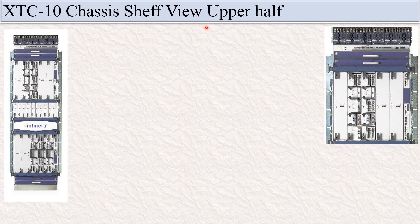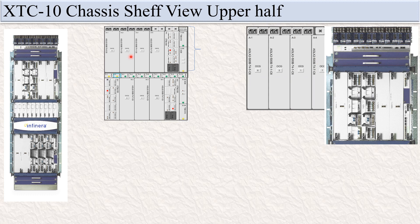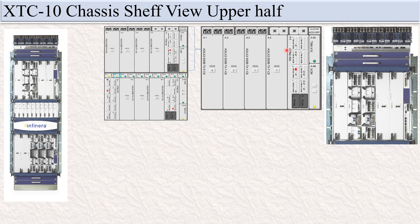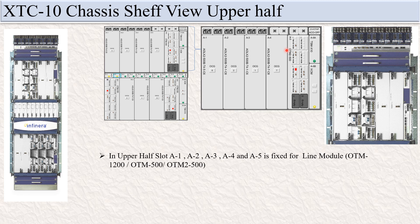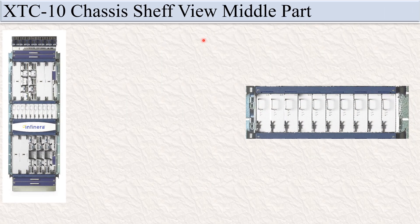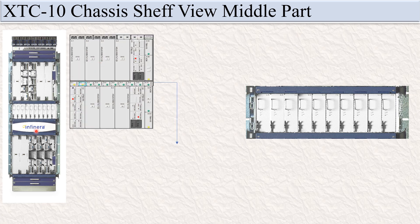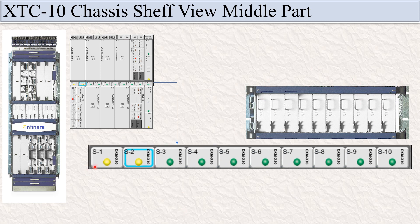Let's see the XTC 10 chassis self-view upper half. This is the physical view and this is the upper half. In the upper half, you can see A1, A2, A3, A5, A6 for the line modules. A6A is fixed for the TSM X10 card and A6B is fixed for the Axiom card. In the same view, you can see the middle part. S1 to S10 is for the OXM 2 X10 card.